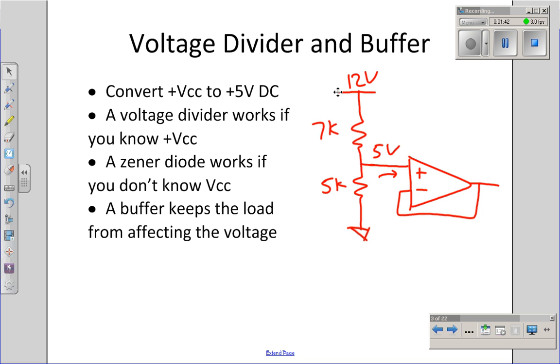If that works, if I know what the input voltage is. If I'm not sure what the input voltage is, I could use a zener diode. Let's take a 5 volt zener diode on this side. The voltage across the zener diode is fixed, regardless of what this voltage is. And likewise, the buffer will hold the output at 5 volts fixed.